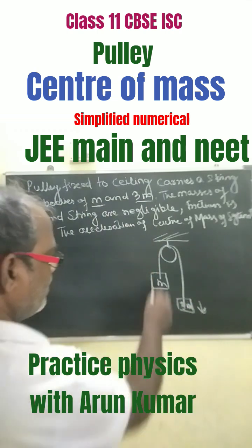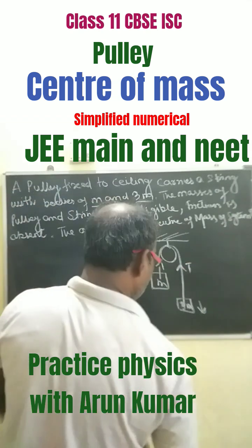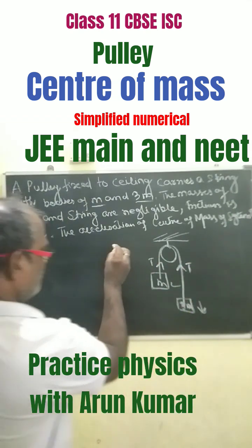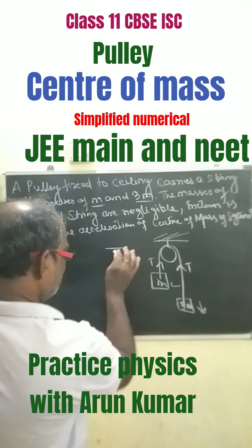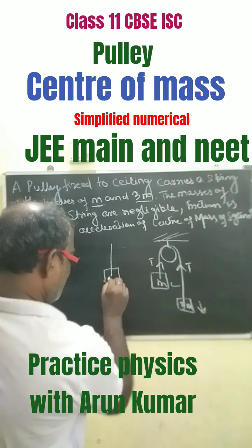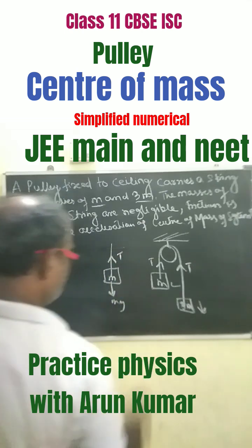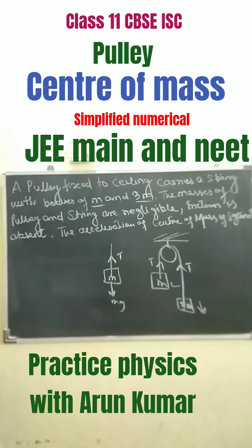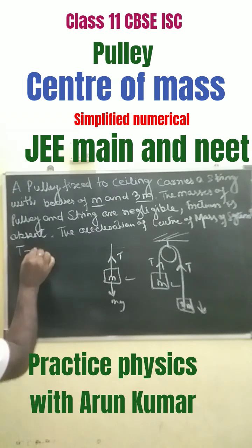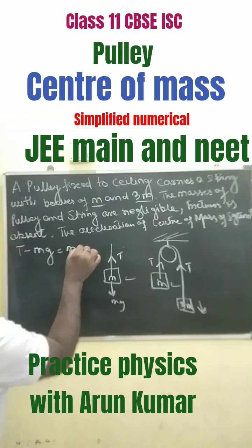Let T be the tension in the string. The free body diagram shows mass M hanging with weight Mg downward and tension T upward. From this, the equation for mass M is: T minus Mg equals MA.